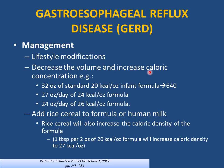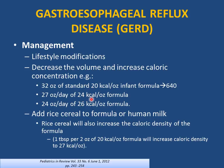Management of GERD includes lifestyle modifications: decrease the volume of formula but increase caloric density to maintain the same caloric intake. For example, reducing from 32 to 27 ounces per day while changing to 24 cal/oz formula maintains 640 cal/day. You can also change the water-to-powder ratio to increase caloric density, or add rice cereal to increase density.